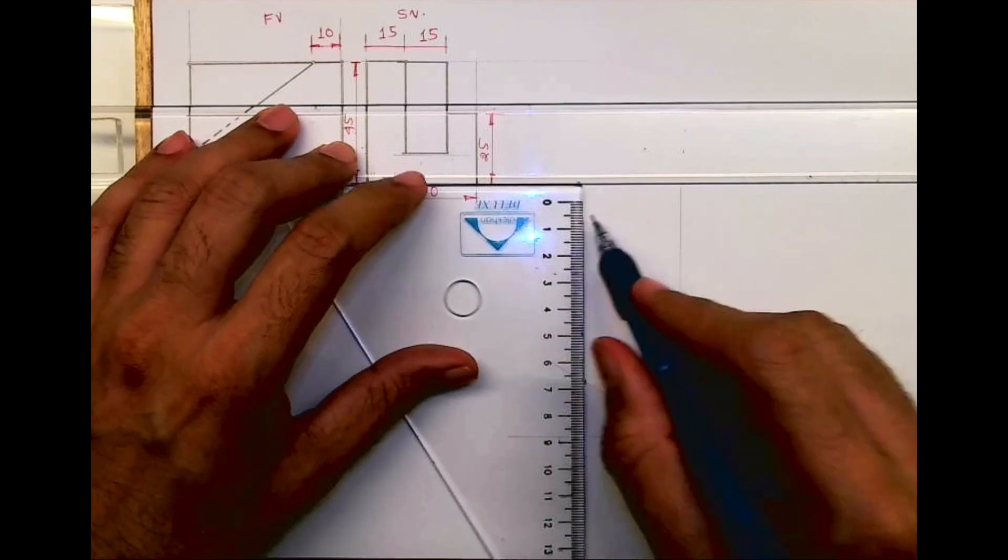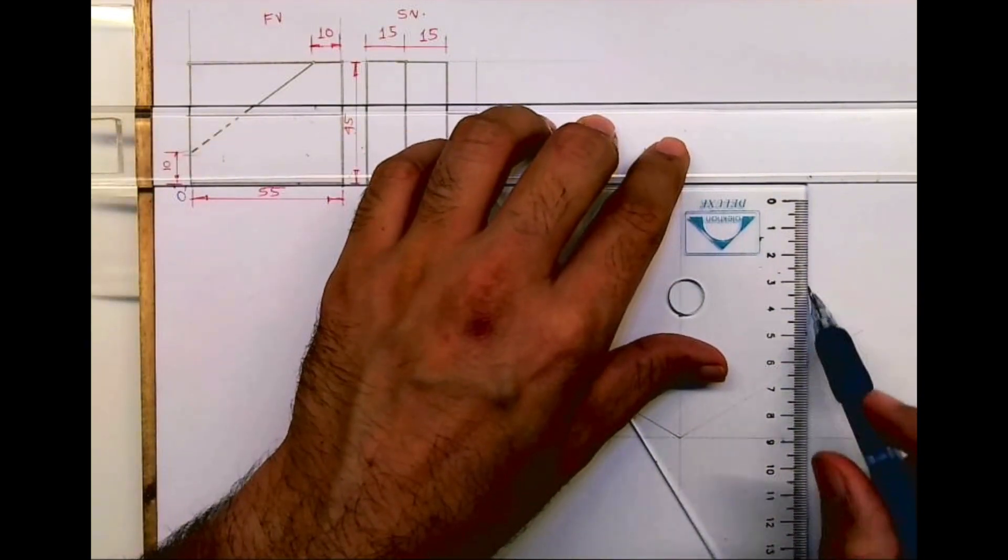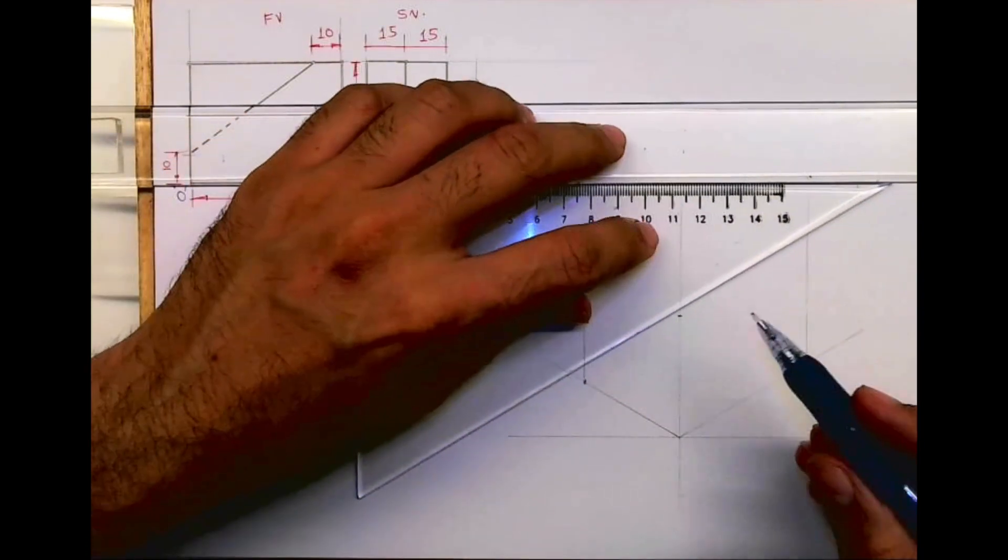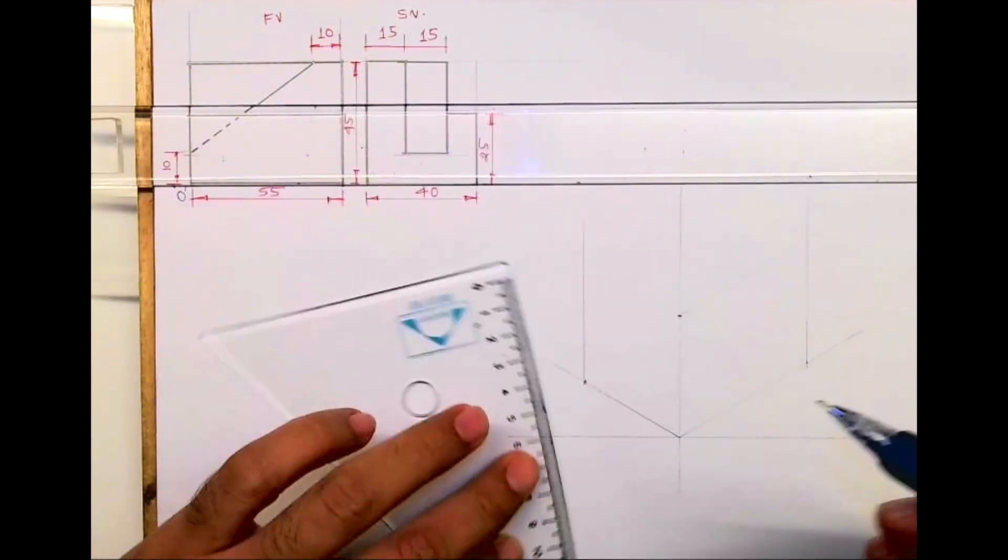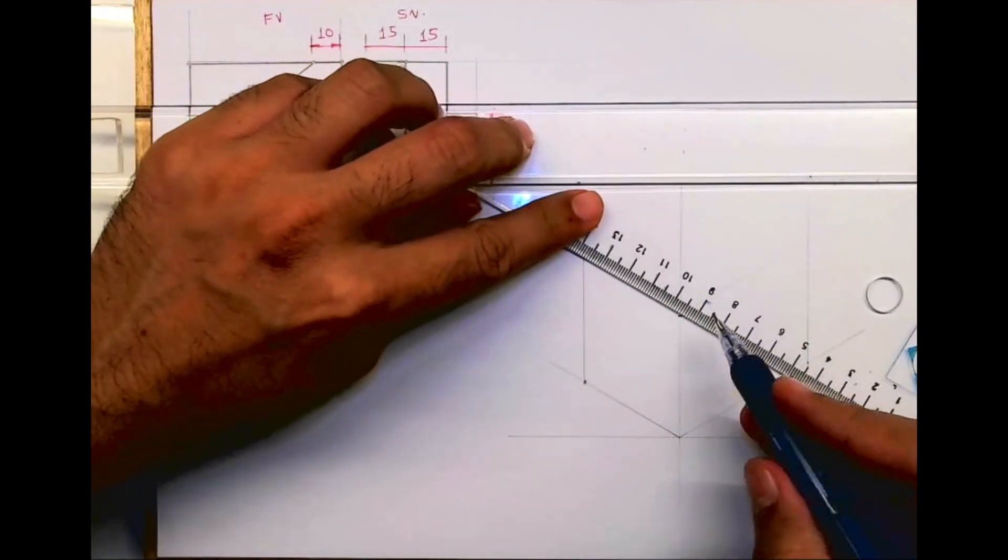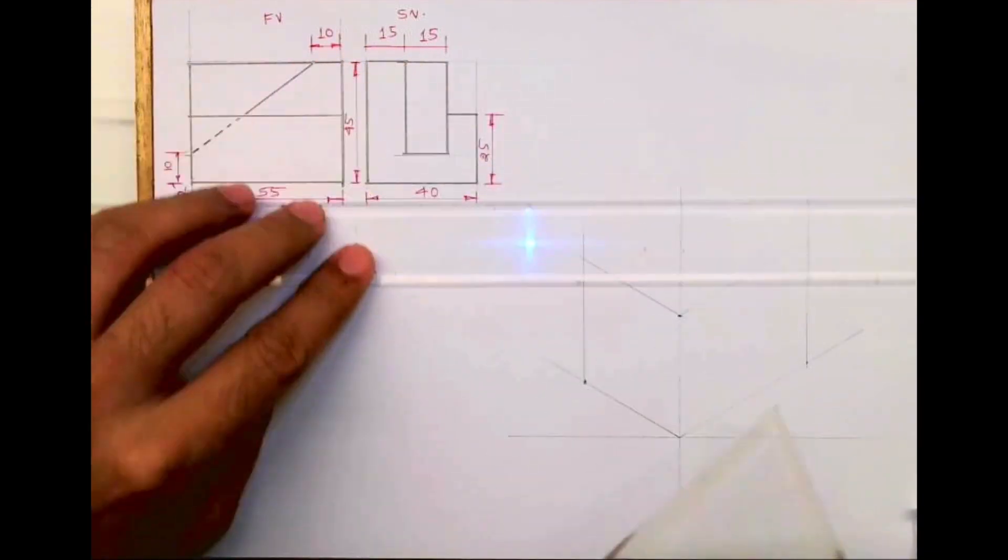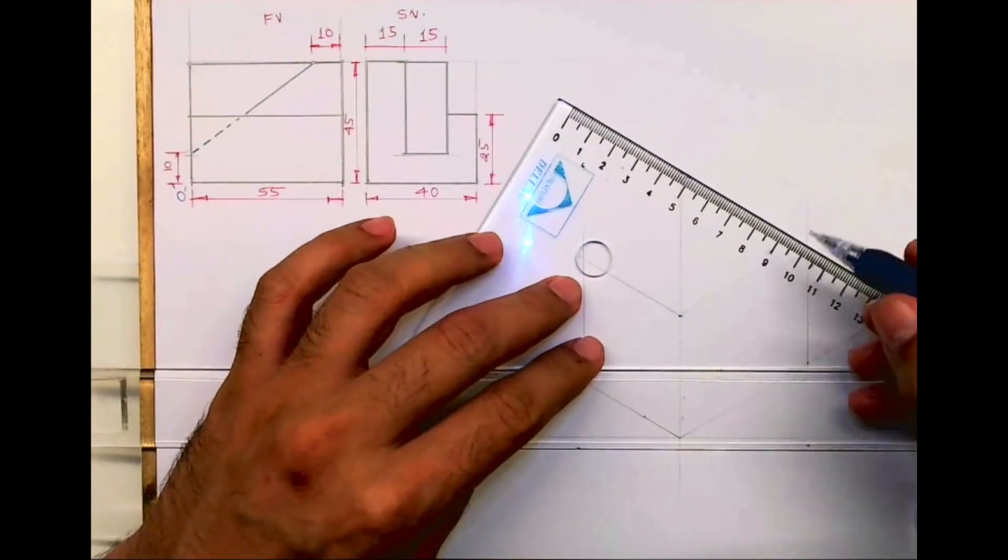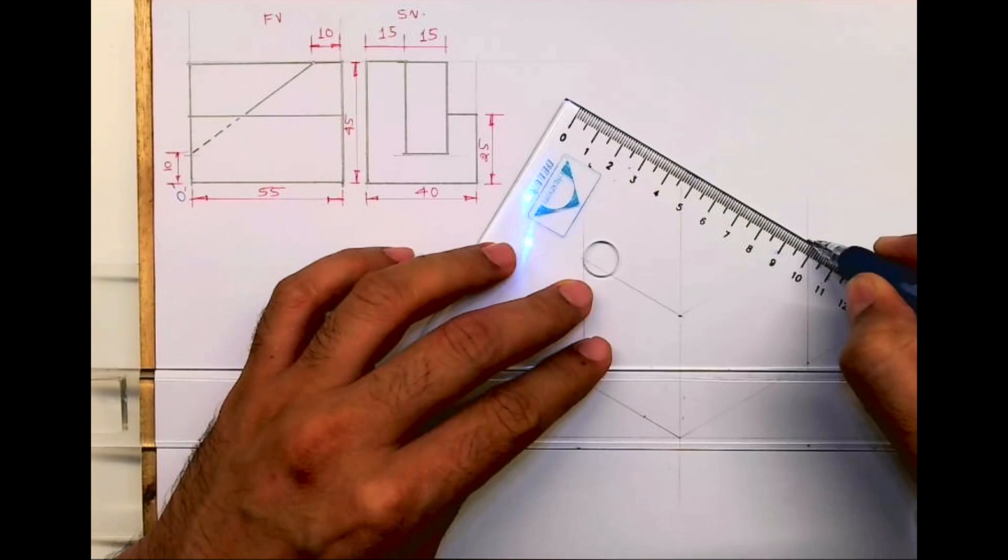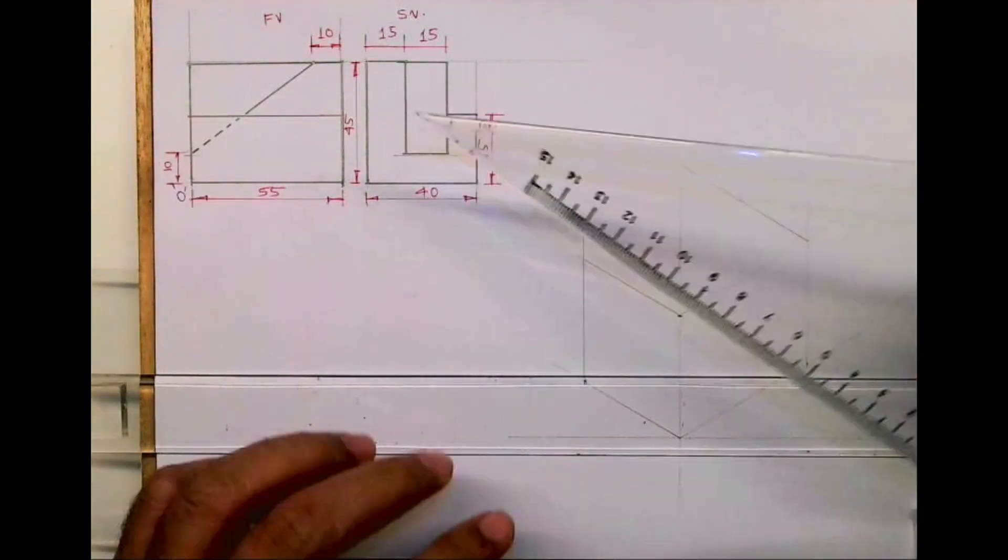After marking length, width, and height, we can complete the box and draw parallel lines like this. So we are done with the box.